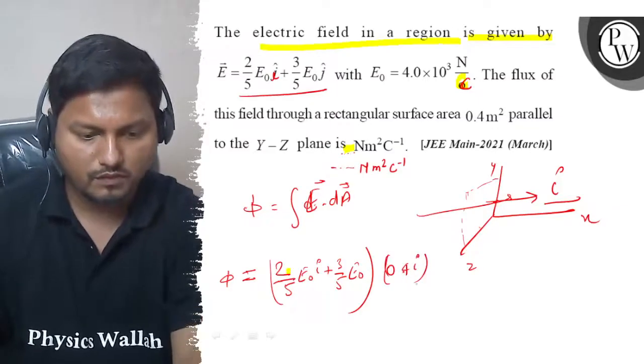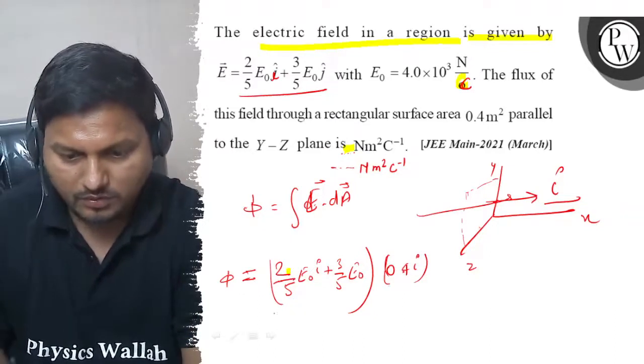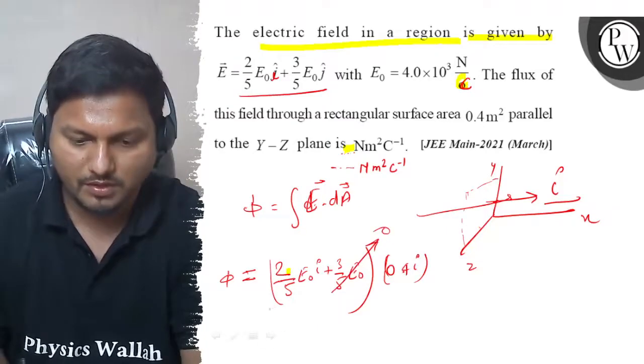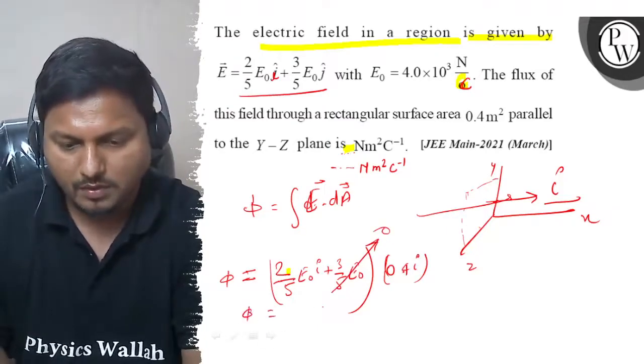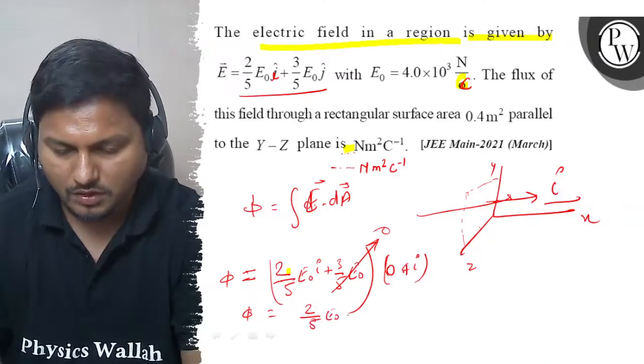If we take the dot product of these two vectors, then the j factor will be zero because i dot j will be zero. So phi will be 2 by 5 E naught into 0.4 in the magnitude form.